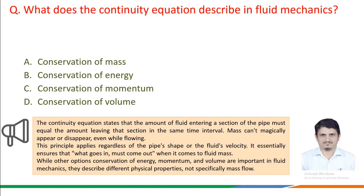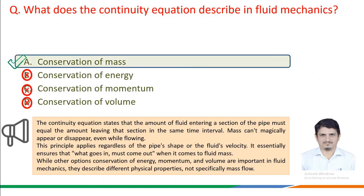What we must know: the continuity equation states that the amount of fluid entering a section of a pipe must equal the amount leaving that section in the same time interval. Mass can't magically appear or disappear, even while flowing. This principle applies regardless of the pipe's shape or the fluid's velocity — what goes in must come out when it comes to fluid mass. While conservation of energy, momentum, and volume are important in fluid mechanics, they describe different physical properties, not specifically mass flow. Therefore, the correct answer is option A: the continuity equation describes conservation of mass.